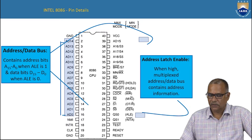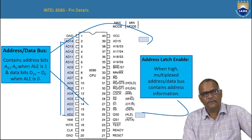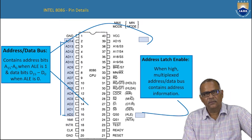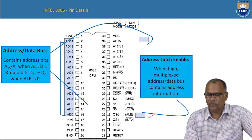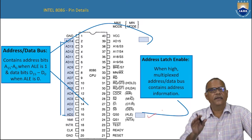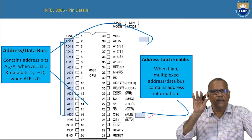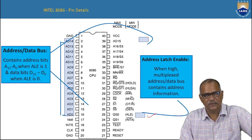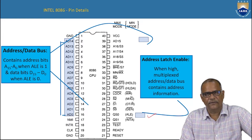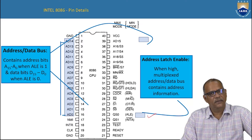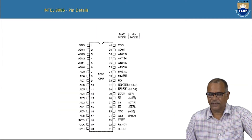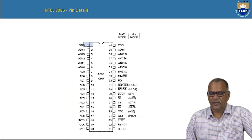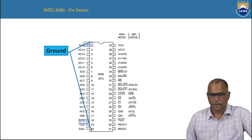When address is available on the AD0 to AD15 lines, the ALE signal goes high. It indicates that the information present on the AD0 to AD15 bus is address. During other parts of time, this ALE signal is disabled.